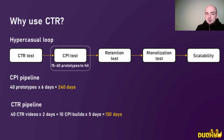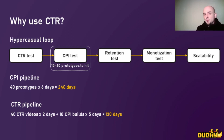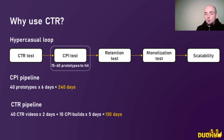Here is a rough estimate of how both pipelines work. The first one requires 40 prototypes at approximately 6 days each, making 240 days total. The other pipeline is 40 CTR videos at approximately 2 days each, plus 10 builds at 5 days each — approximately 130 days total, which is really, really much less than the first case.